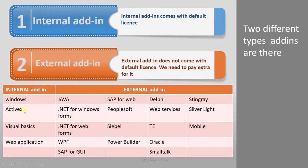Now let's see the list of different add-ins. First, we will look into internal add-ins. The first one is Standard Window, and it is a built-in add-in — if you see in the installation manager, this add-in will not be visible because it is in-built. Next are ActiveX, Visual Basic, and Web. All these four add-ins are internal add-ins and come with the default license.